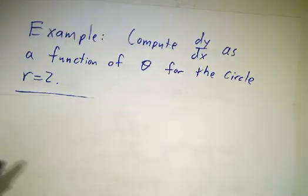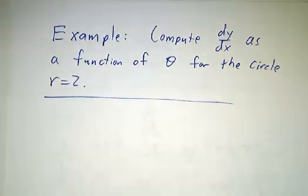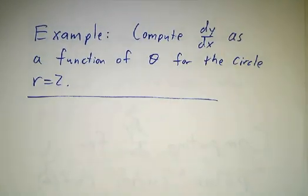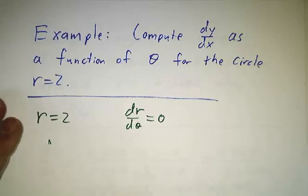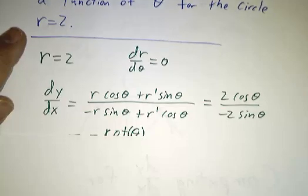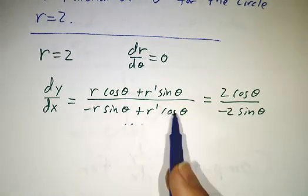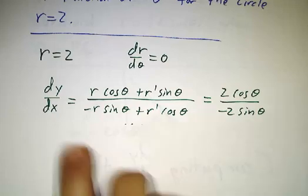So, the first example is we want to look at a circle. Just take a circle of radius 2, and we want to compute the slope of the tangent line as a function of where you are in the circle. Well, that's pretty easy. r is 2, so r' is 0. Our formula says r cos θ plus r' sin θ over that.